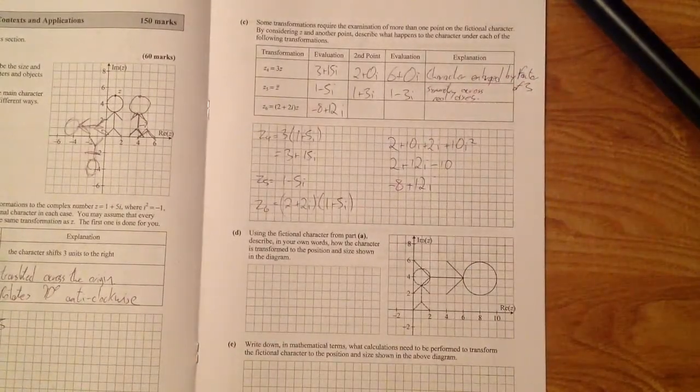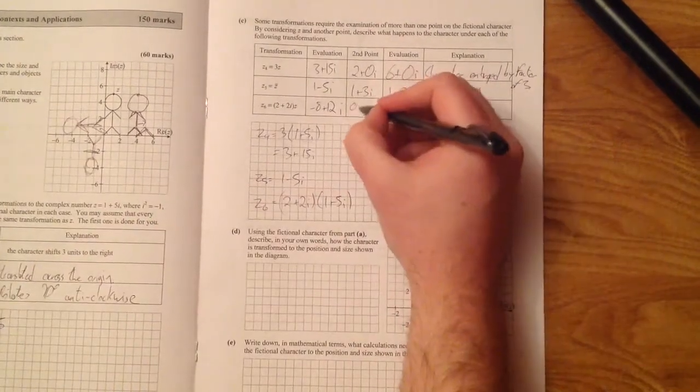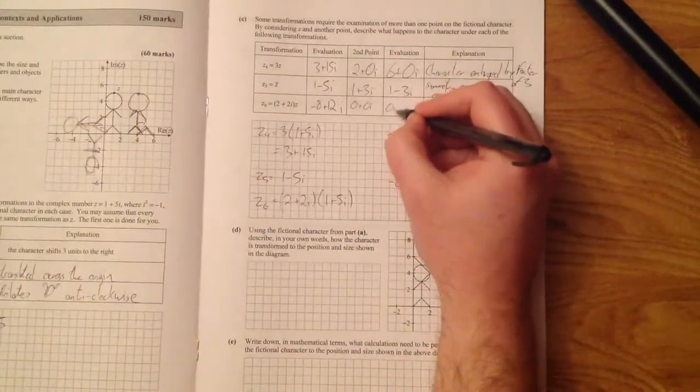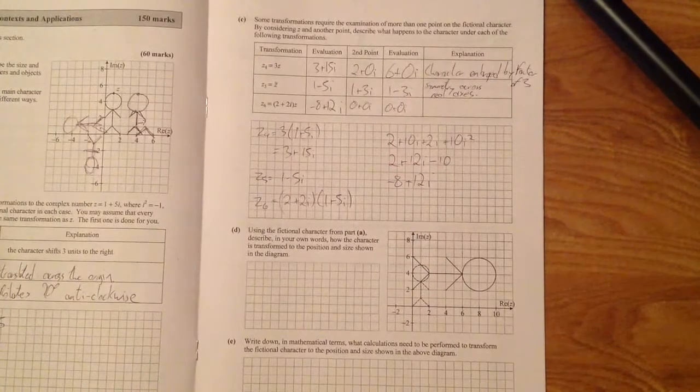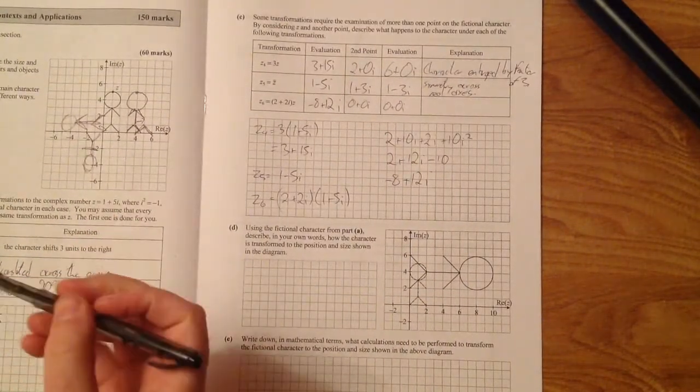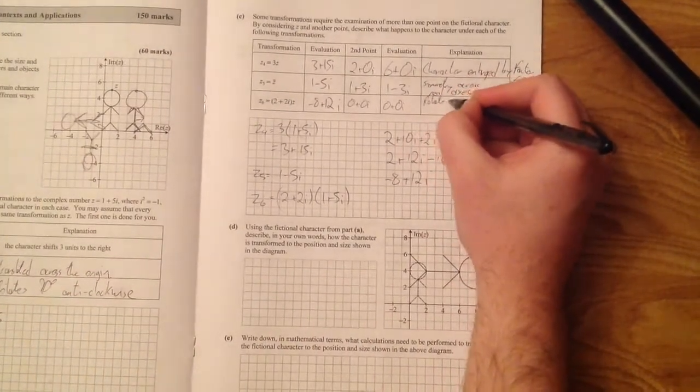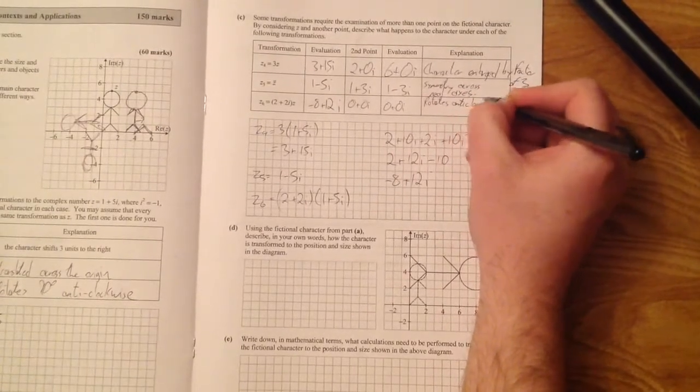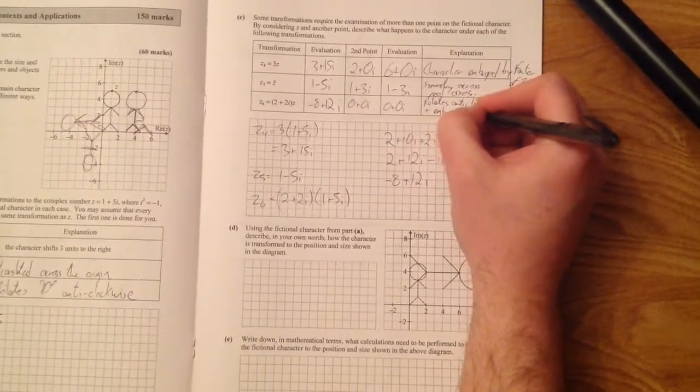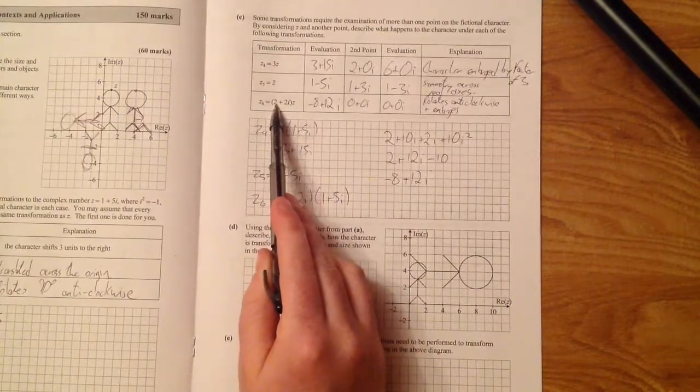And then the last one says, take 0 plus 0i, which is here the origin. And when you apply the same thing, you get 0 plus 0i. So obviously, our character is going to stay, or this part of the character is still going to be involved. And what you find is, it's rotated and enlarged. So rotates anti-clockwise and enlarges. And this makes sense, because you're multiplying by an imaginary number, and you're multiplying by a real number.